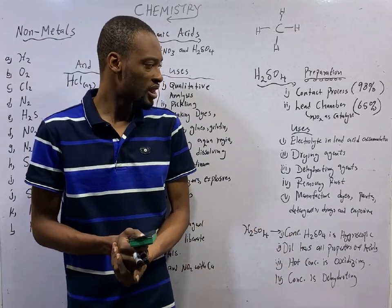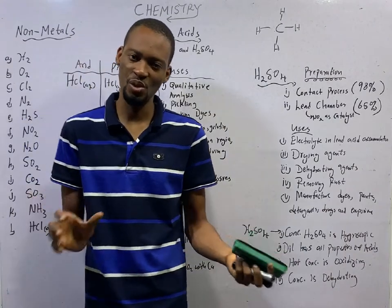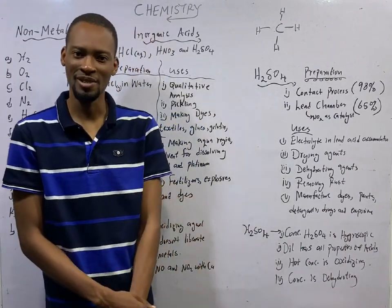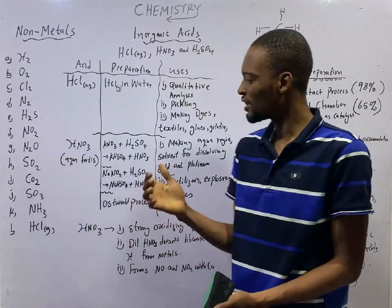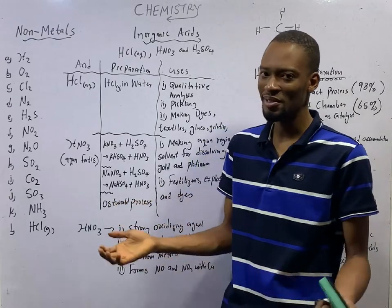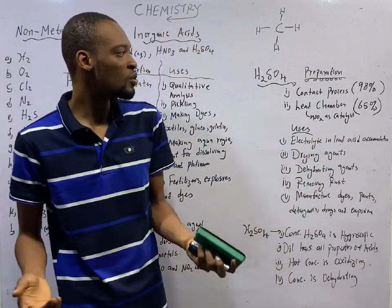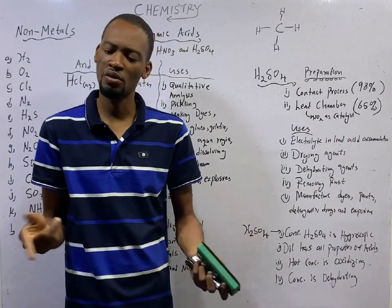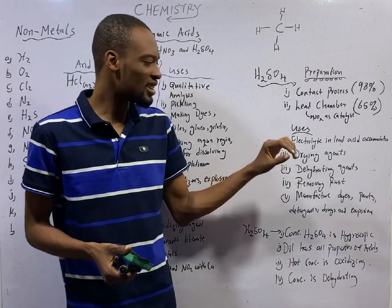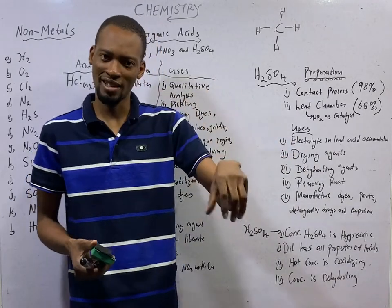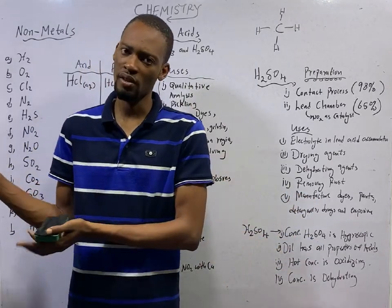The uses of H2SO4 are numerous. For example, they are used as electrolytes in lead-acid accumulator. Your car batteries use H2SO4 as electrolytes. And what are electrolytes? They are compounds that dissolve when they are in molten state or when they are in solution. The ions present in H2SO4, we have the hydrogen ion and SO4 ion. They are used as drying agents. Drying is simply the removal of water molecules from a substance.